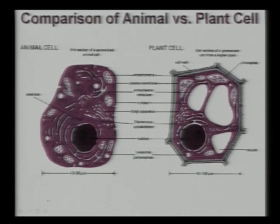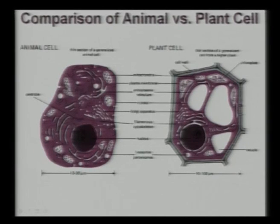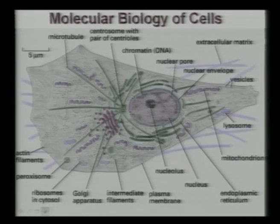Plant cells have a very regular structure, whereas animal cells have an irregular structure. Animal cells have a nucleus enclosed by a nuclear membrane, cytoplasm inside the cell, mitochondria, and Golgi body. This is the molecular biology of the cell.